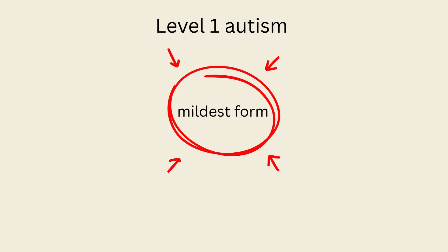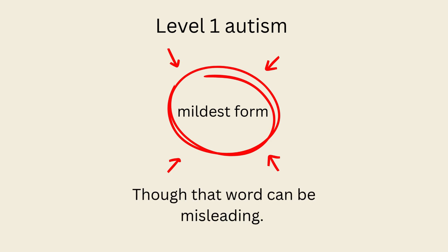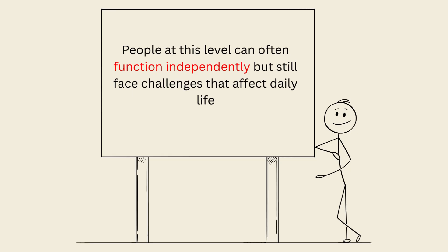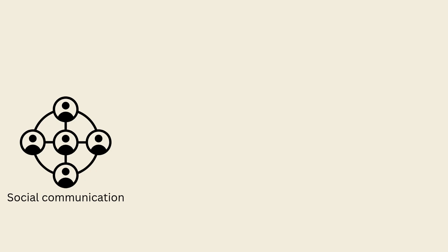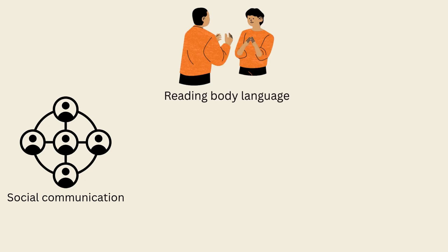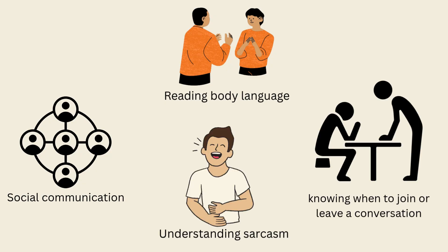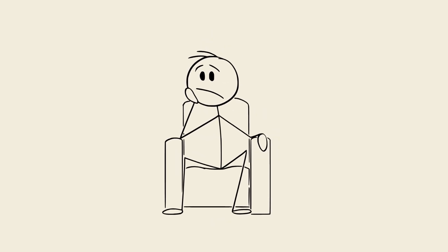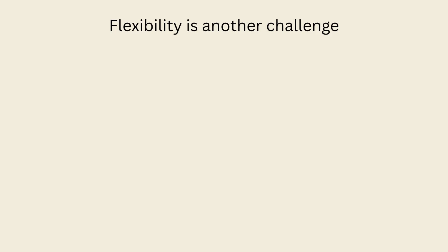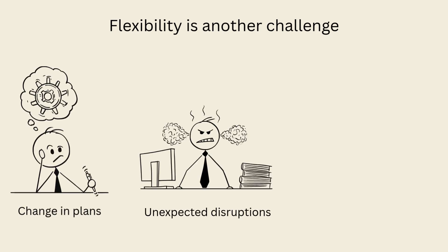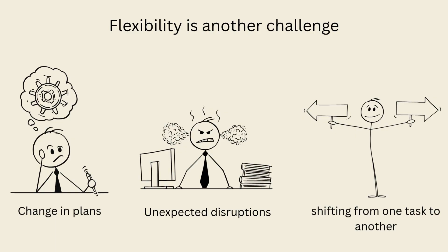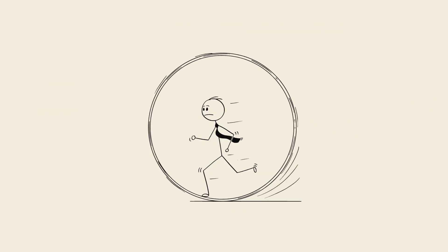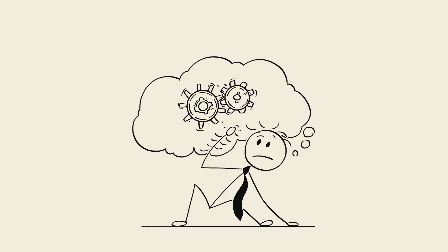Level 1 Autism is sometimes called the mildest form, though that word can be misleading. People at this level can often function independently but still face challenges that affect daily life. Social communication is one of the biggest hurdles — reading body language, understanding sarcasm, or knowing when to join or leave a conversation doesn't come naturally. They may come across as blunt or aloof when really they're trying hard to connect. Flexibility is another challenge — change in plans, unexpected disruptions, or shifting from one task to another can cause stress. Special interests and routines often provide comfort and focus, but can also make it harder to adjust in social or work settings.